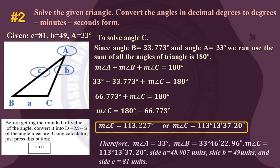Therefore: angle A = 33°, angle B = 33° 46′ 22.96″, angle C = 113° 13′ 37.20″, side a = 48.007 units, side b = 49 units, and side c = 81 units.